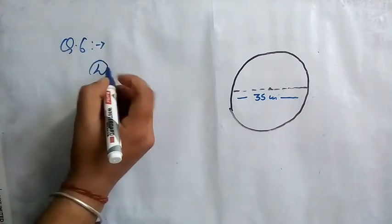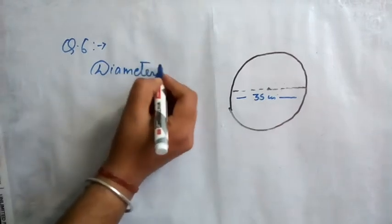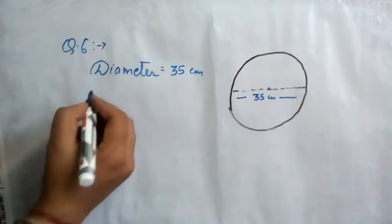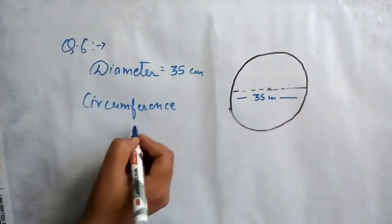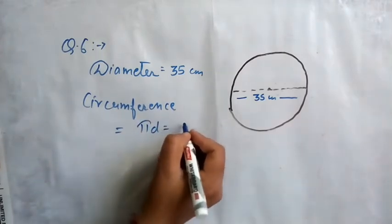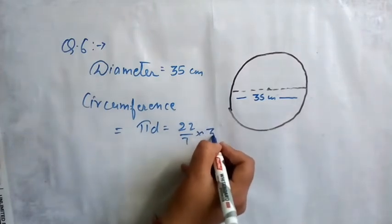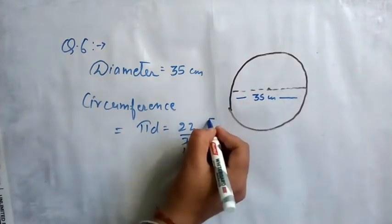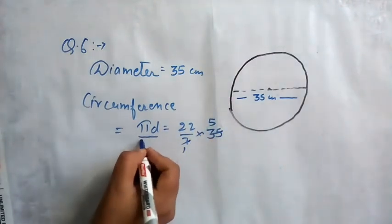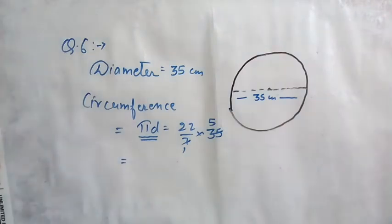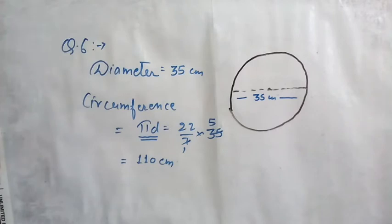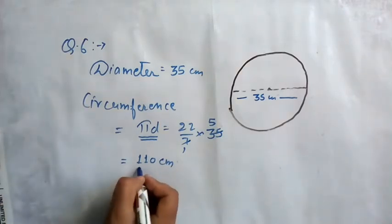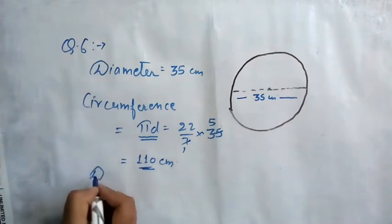This is question number six of your worksheet. What is given: diameter equals 35 centimeters. Circumference will be πd, that is 22/7 multiplied by 35. Seven fives are 35, so 22 fives are 110 centimeters. When diameter is given, πd is the formula for circumference.